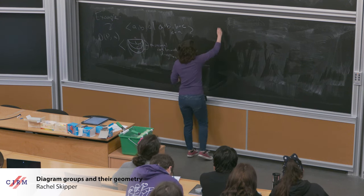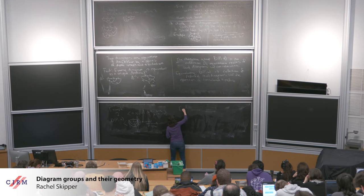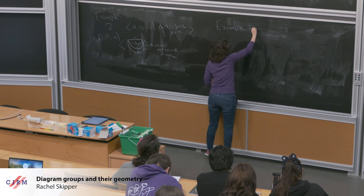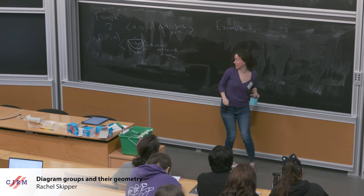Example two, which was probably the main motivation behind Guba, Sapir, Meekin, and Kilobarda, is Thompson's group F.